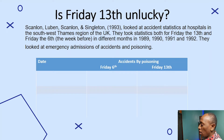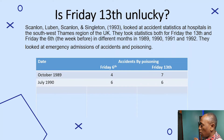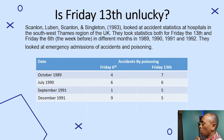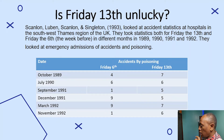We have a table presenting the data with the date, accidents by poisoning, Friday the 6th, and Friday the 13th. On October 1989, only four accidents by poisoning were reported on Friday the 6th, while on Friday the 13th, seven accidents were reported. In July 1990, six accidents were reported on both days. On September 1991, one accident was reported on Friday the 6th and five on Friday the 13th. In December 1991, nine on Friday the 6th and five on Friday the 13th. In March 1992, nine on Friday the 6th and thirteen on Friday the 13th. In November 1992, one on Friday the 6th and six on Friday the 13th.